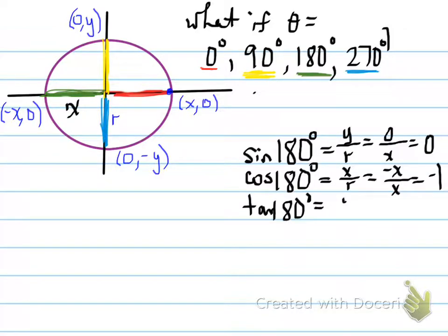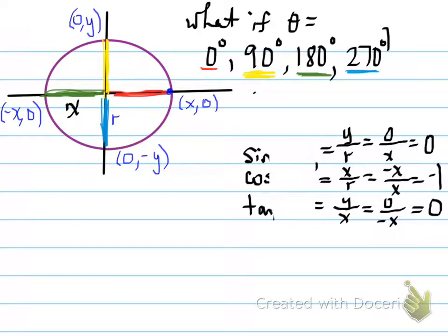Tan of 180, you determine y over x. y is 0, x is negative x. 0 over negative x is always going to be 0. All right, so now we've determined the sine, cosine, tan of 180. Let's change it for the last one.